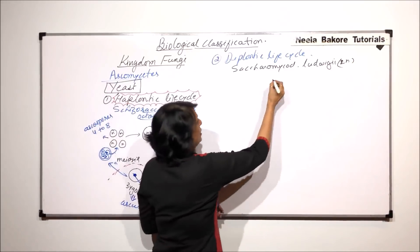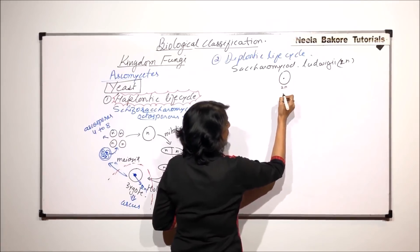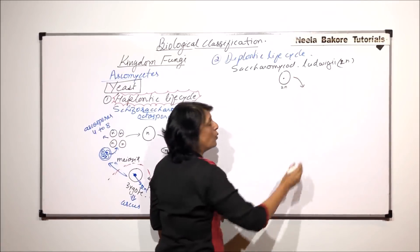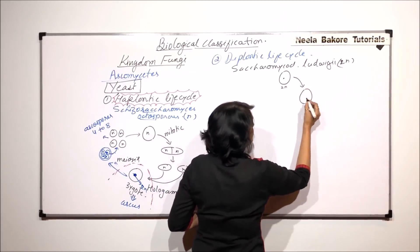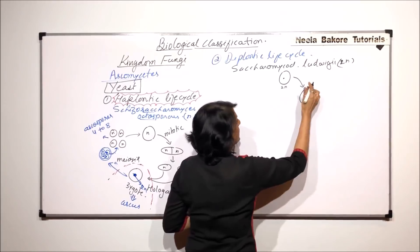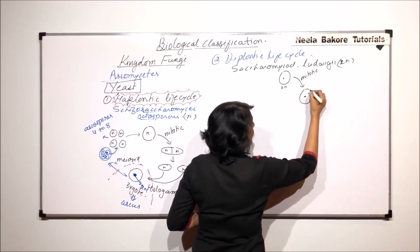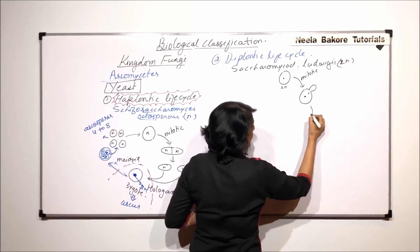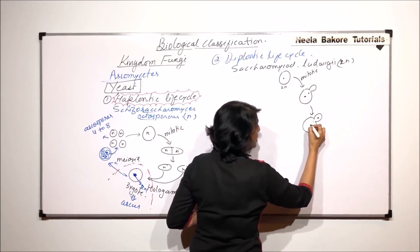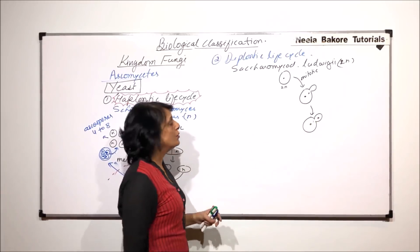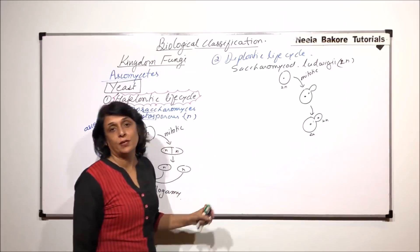Now how do they reproduce? Suppose this is the cell, which is a diploid cell. It undergoes asexual reproduction, say by budding. The nucleus is going to divide mitotically, mitotic division and a bud is formed. This bud which is formed gets that nucleus and it is going to detach. This is a diploid cell, this is also a diploid cell.